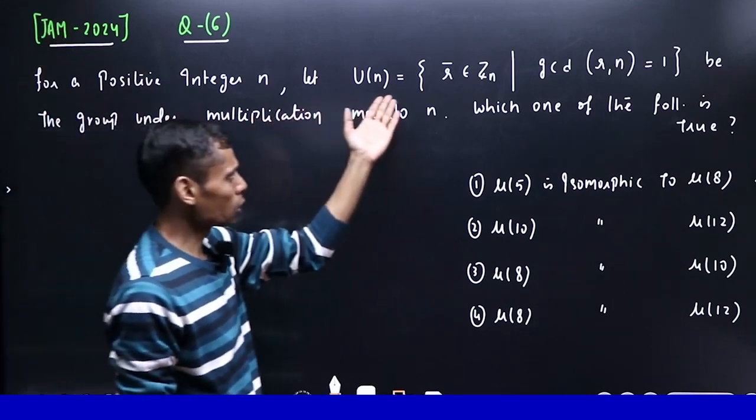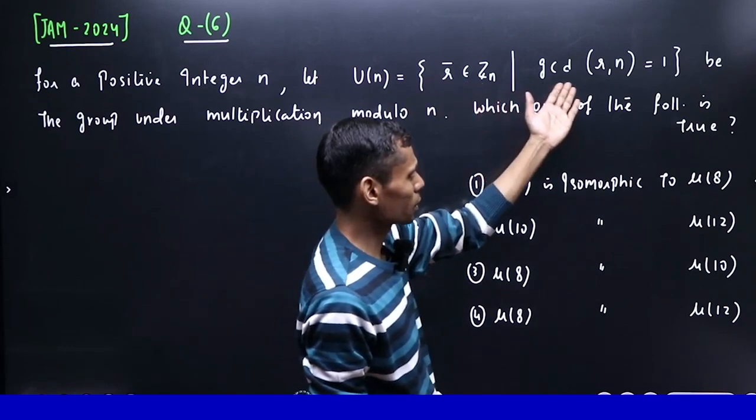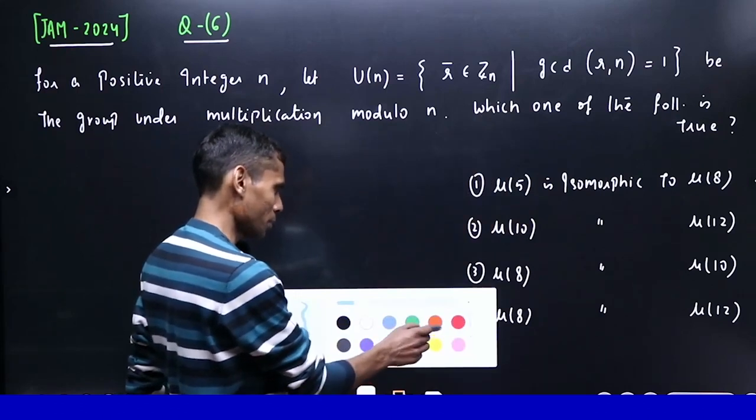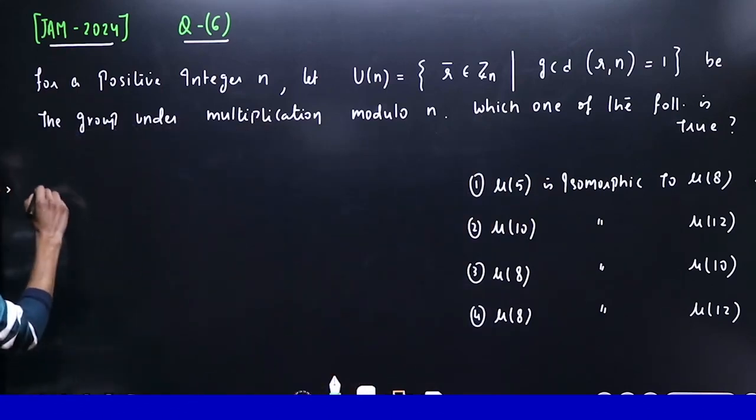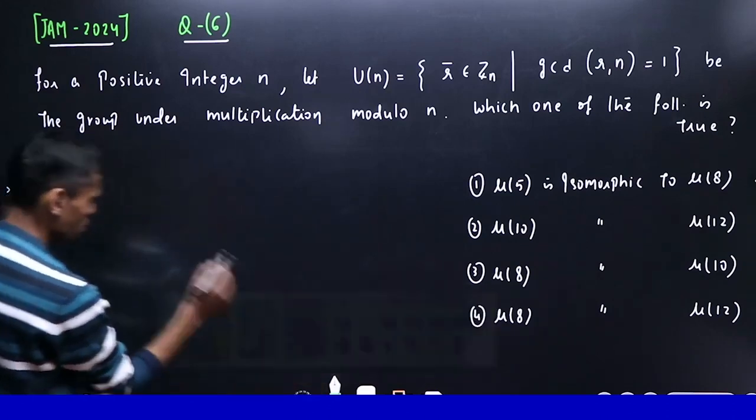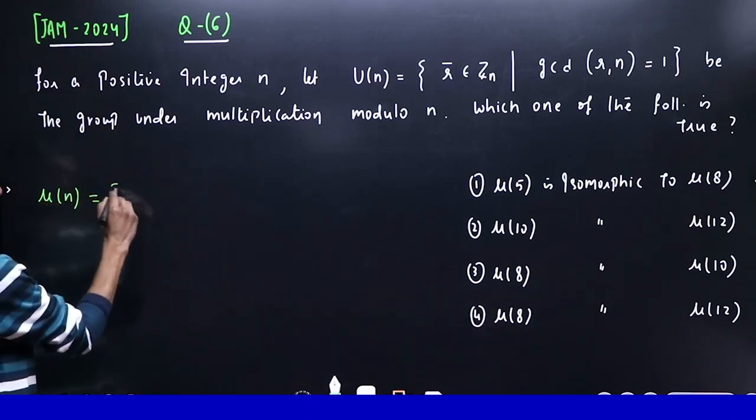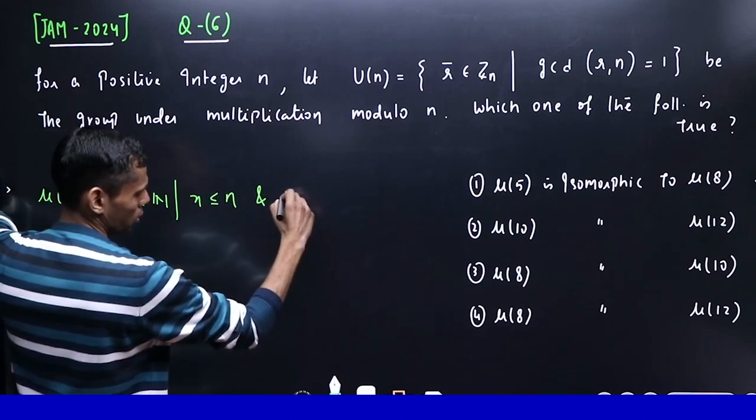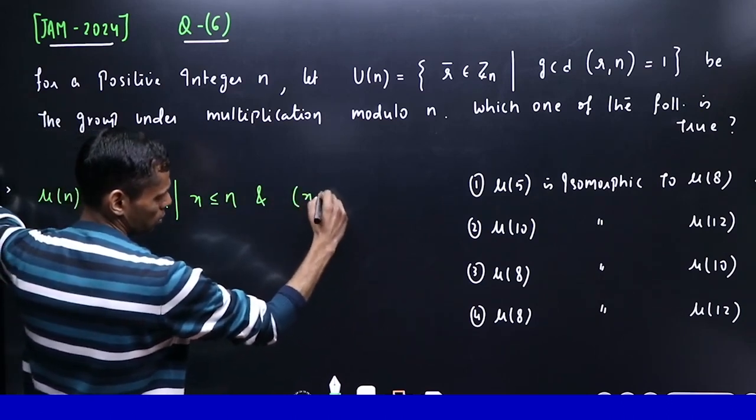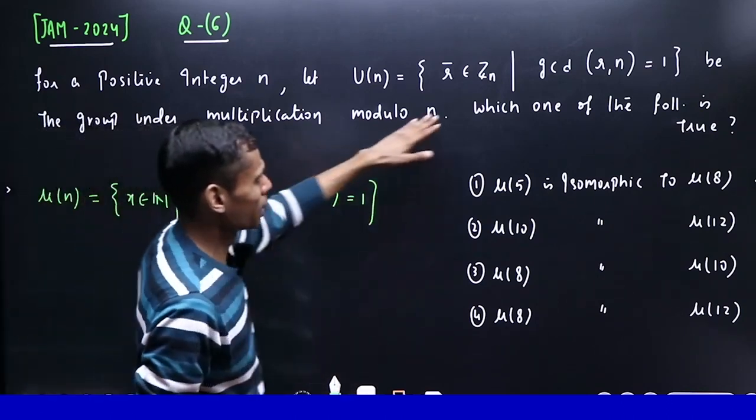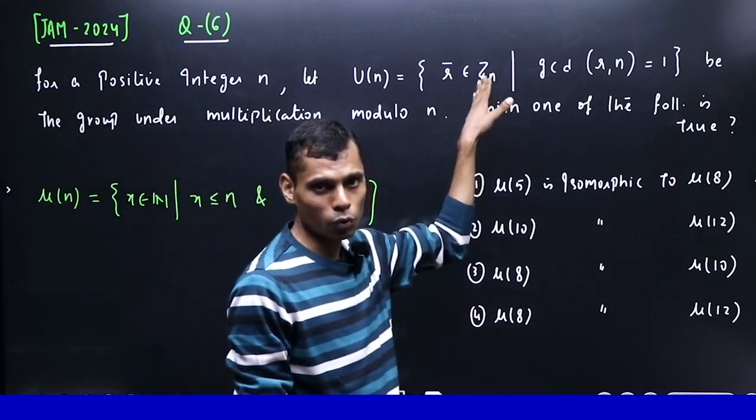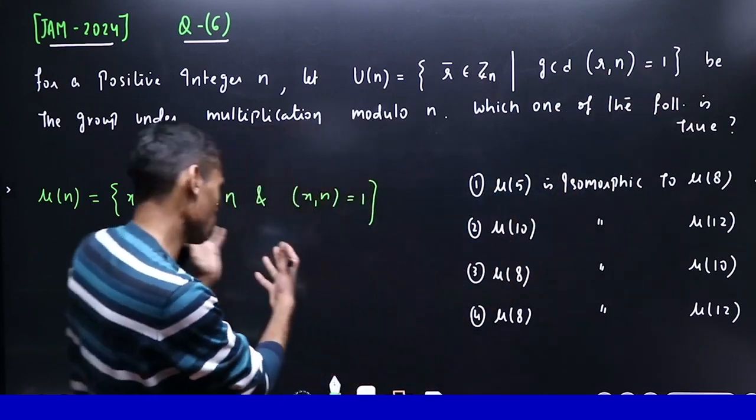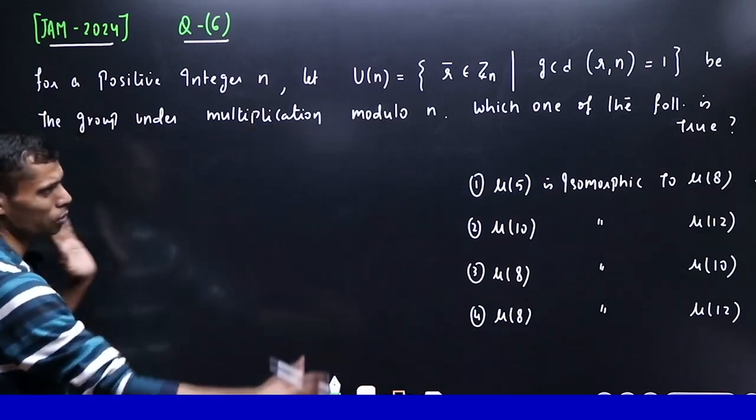Question 6: For a positive integer n, let μ(n) equal to those r̄ belonging to Zₙ for which gcd(r,n) is 1. You can define μ(n) as the collection of natural numbers which are less than or equal to n and coprime to n. If you're putting r in Zₙ, r's value goes from 0, 1, 2 up to n. From those, see which ones are coprime to n - that forms μ(n). The question asks which of the following is true.